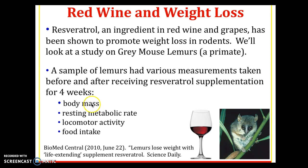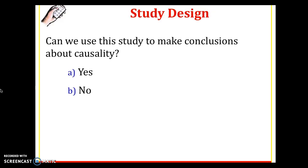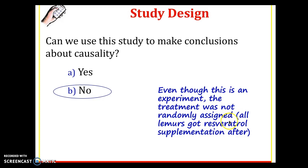After those four weeks, all the lemurs were tested for body mass before and after, resting metabolic rate, locomotor activity, and their food intake. This is a study done in 2010. Can we use the study to make conclusions about causality — can we say that drinking wine caused the lemurs to lose weight? It's actually no. It is an experiment, but the treatment was not randomly assigned. All the lemurs got the red wine supplement after they were tested. To draw conclusions about causation, you need an experiment with random assignment, where some lemurs would get the supplement and some would not.